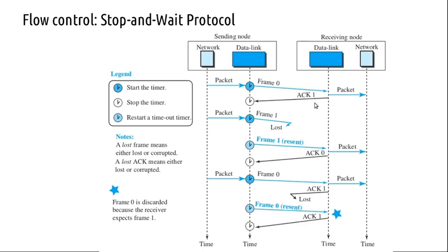The acknowledgement has a sequence number. Data frames and acknowledgement frames have sequence numbers which alternate between 0 and 1. So the sender sends a frame with sequence number 0, and the receiver sends back an acknowledgement frame with sequence number 1, indicating that the next expected data frame should have sequence number 1. If it gets a frame with sequence number 0 again, it understands that it is a duplication.